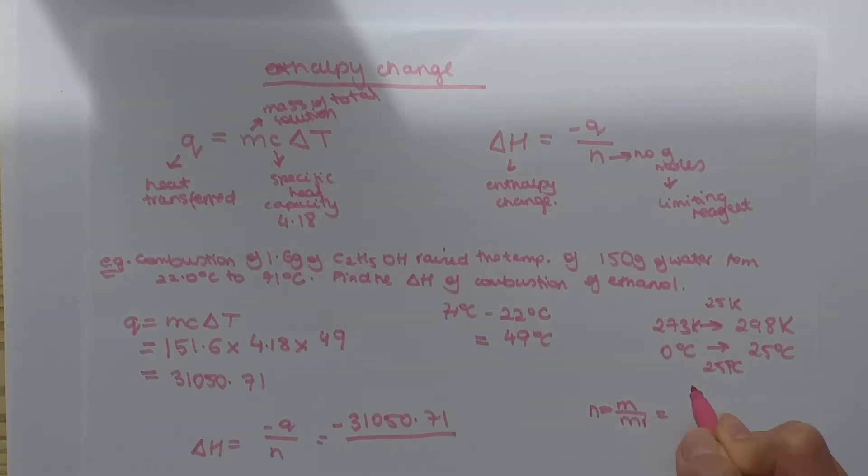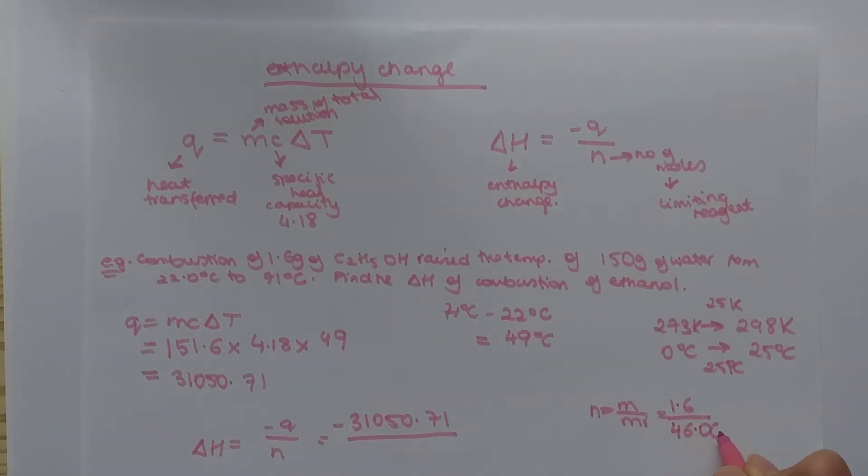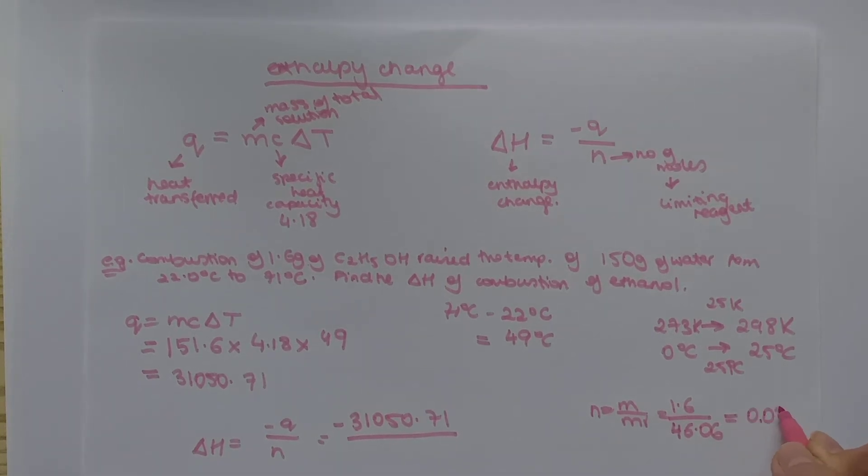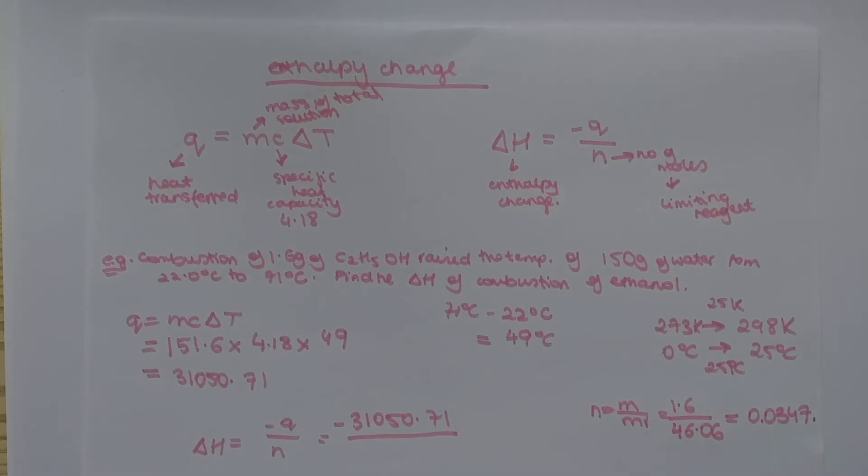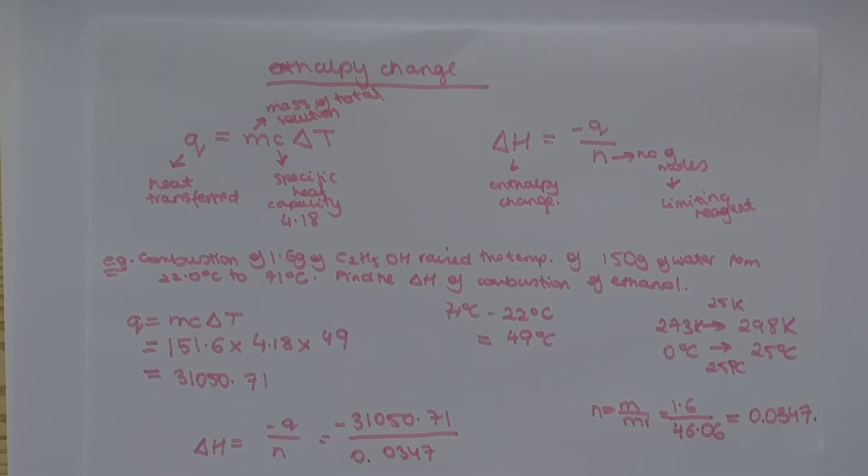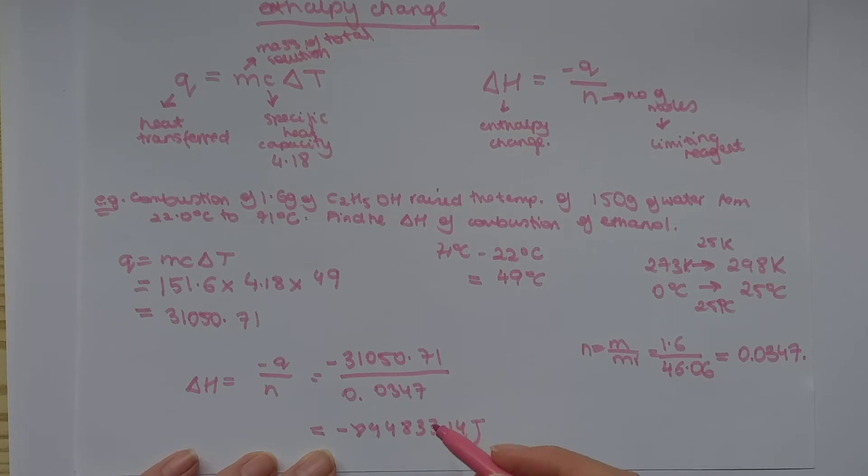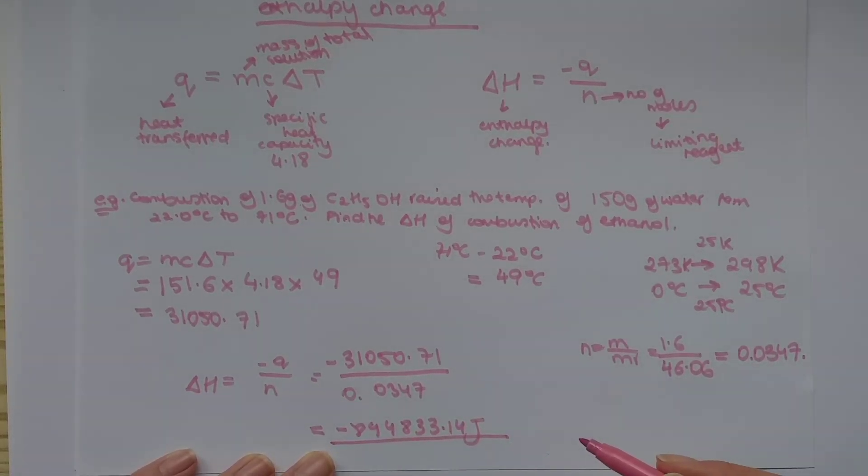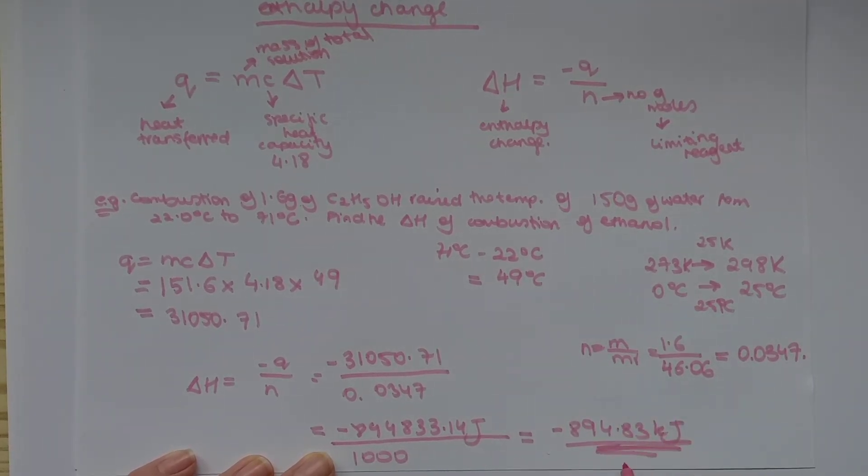So, N equals mass over MR. Mass of ethanol is 1.6. The MR of ethanol is 46.06. And the number of moles works out to be 0.0347. Now that we have number of moles, we can put it back into our equation. And your final answer is minus 894833.14 joules. This number is very big. And because it's very big, in your exam, you are usually asked to show your answer in kilojoules, not joules. In order to find kilojoules from joules, you need to divide your answer by 1000. And what you get is minus 894.83 kilojoules. And this is your final answer.